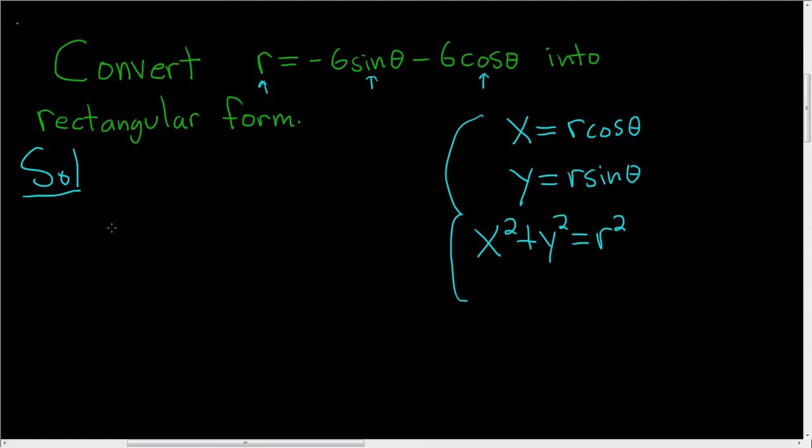So on the left hand side, r times r will give us r squared. And on the right hand side we can just multiply each term by r. So negative 6r sine theta minus 6r cosine theta.